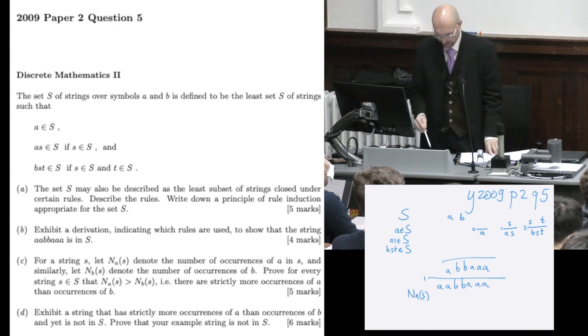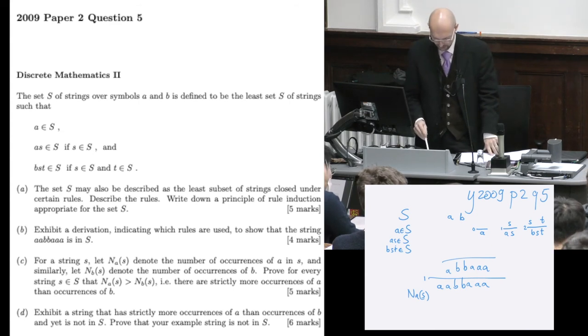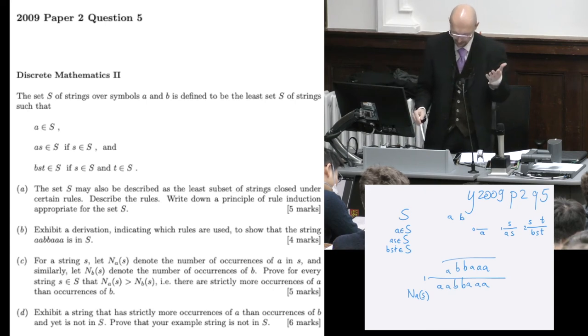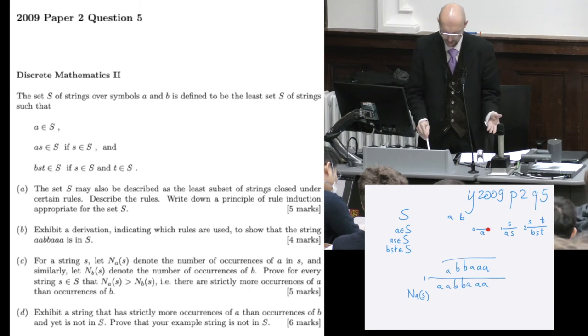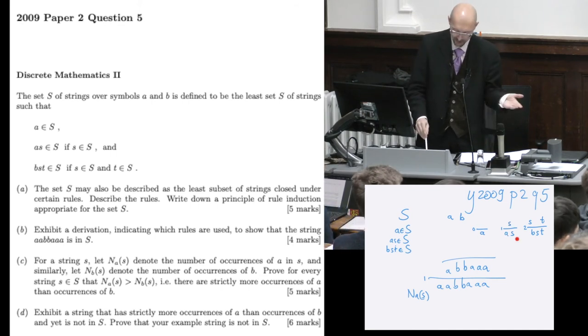Rule induction on these rules, with the property of having strictly more A's than B's. And it's true for the axiom. And if it was true for S, then adding one more A certainly makes it even more true.